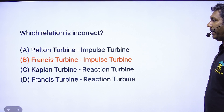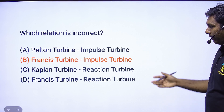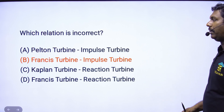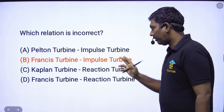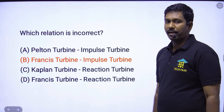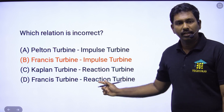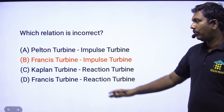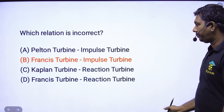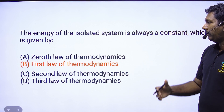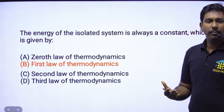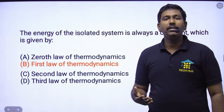Which relation is incorrect? Hydraulic machines: Francis turbine is a reaction turbine — inputs incorrect. Option B. FMI is the answer — one question at a higher level.